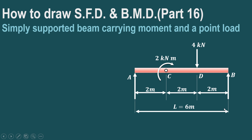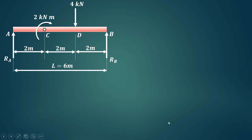In this video we will try to understand how to draw shear force diagram and bending moment diagram in case of a simply supported beam carrying a moment and a point load. The beam is simply supported at points A and B. It carries an external moment of 2 kNm at a distance of 2 m from the left hand support, and a point load of 4 kN at point D at a distance of 2 m from the right hand support.